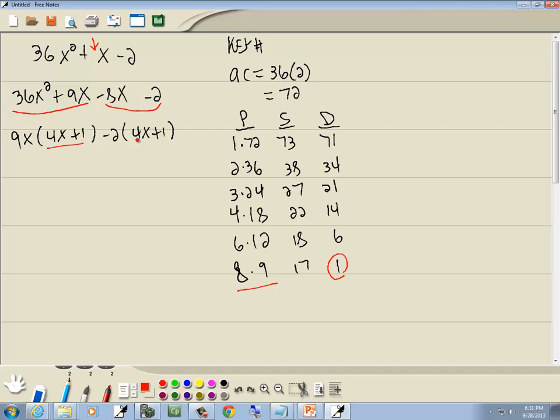Now, our goal was to get this parenthesis the same as this parenthesis, which they are. So I'll factor out a 4x plus 1. And to figure out what's in your second set of parentheses, you can cross out the 4x plus 1's up here. And what isn't crossed out is what goes over here, which would be 9x minus 2. So that would be our answer: 4x plus 1 times 9x minus 2.